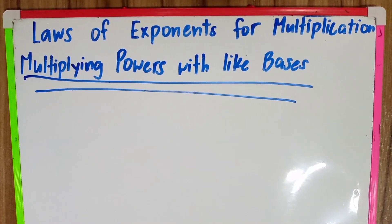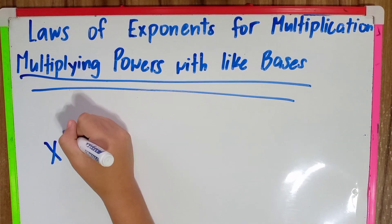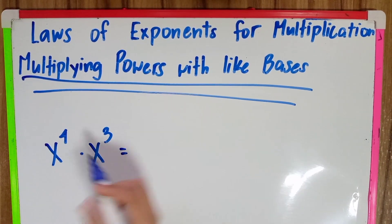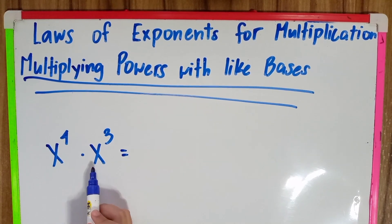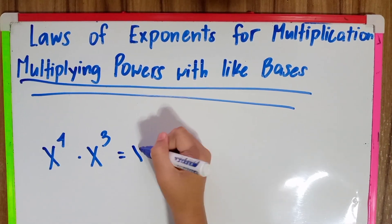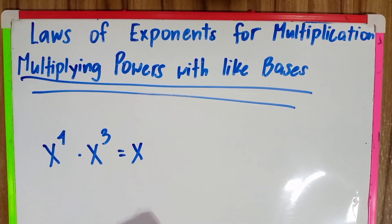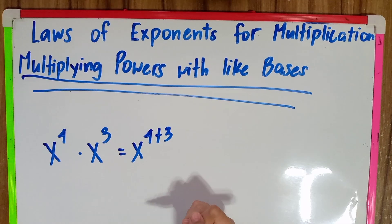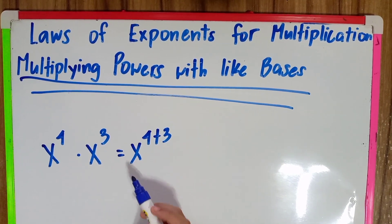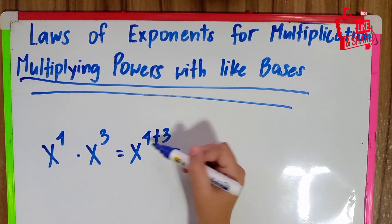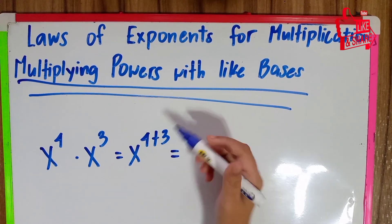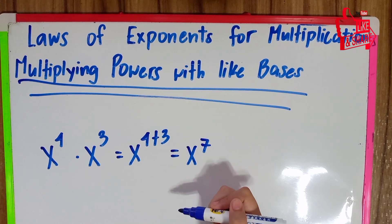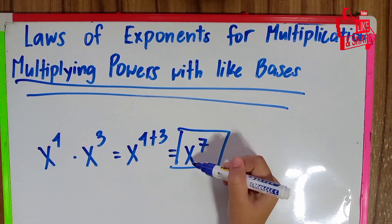Let's have our second example: X raised to 4 times X raised to 3. Same process — i-multiply natin ang ating base, which is X. X times X is equal to X, copy lang natin. And then we add our exponents, which is 4 and 3: 4 plus 3. We simplify — i-add natin ang ating exponent: 4 plus 3 is equal to 7. So X raised to 7. And this is now our final answer: X raised to 7.